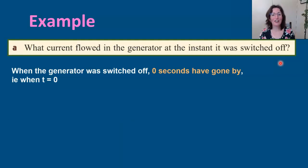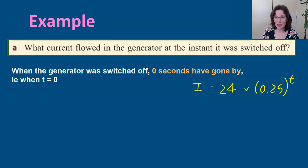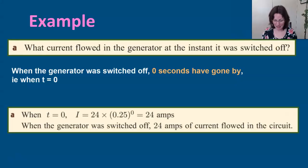Firstly, we're asked what current flowed in the generator at the instant it was switched off. So when the generator was switched off, zero seconds have passed, and so we're going to substitute in t = 0. We're going to substitute in zero where we see a t, and then you can work that out. You can type this whole equation into graph mode if you like, or you can put that in your run mode, and the value that we get for that is 24.